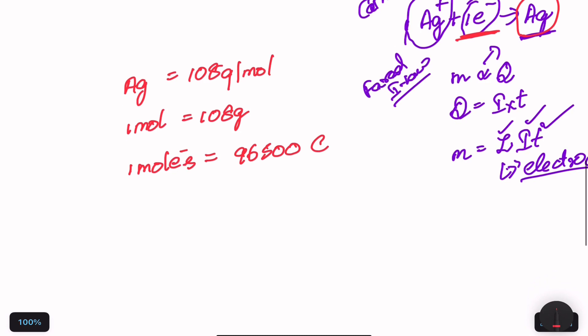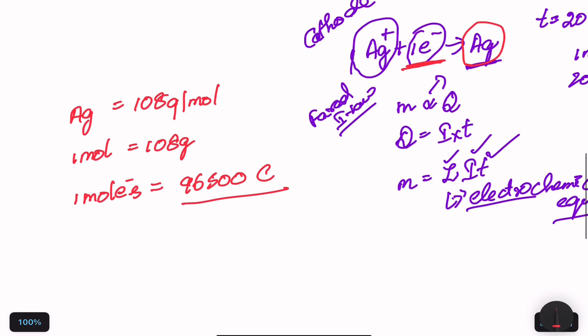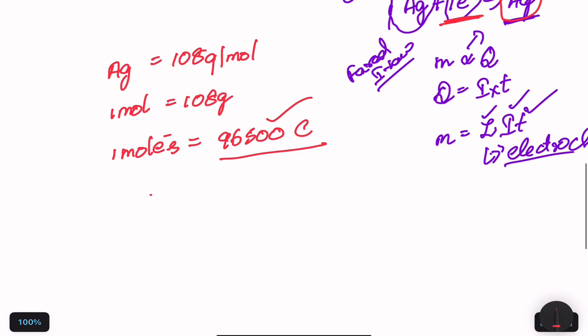One mole of electrons carries a charge equal to approximately 96,500 Coulombs. So when 96,500 Coulombs are passed, 108 grams of silver are deposited.